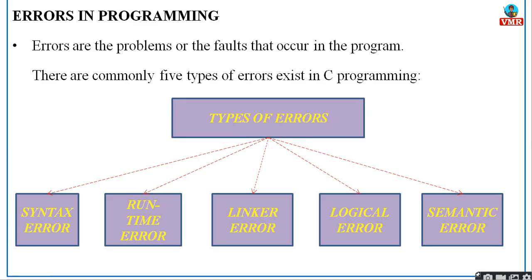Those errors generally occur when you compile your code, or when by mistake you had typed something — for instance, instead of a particular keyword, you used a wrong spelling, or you are not following the rules. All those are considered as errors. In whatever programming language it may be, errors are common, but mostly you will concentrate on syntax errors, runtime errors, and logical errors. Linker and semantic errors are not that much focused on because those are very rare cases.